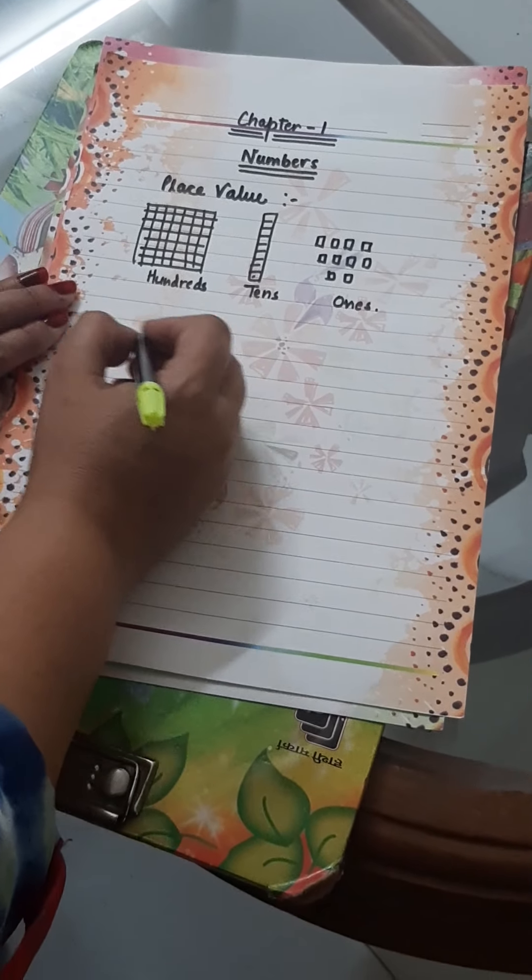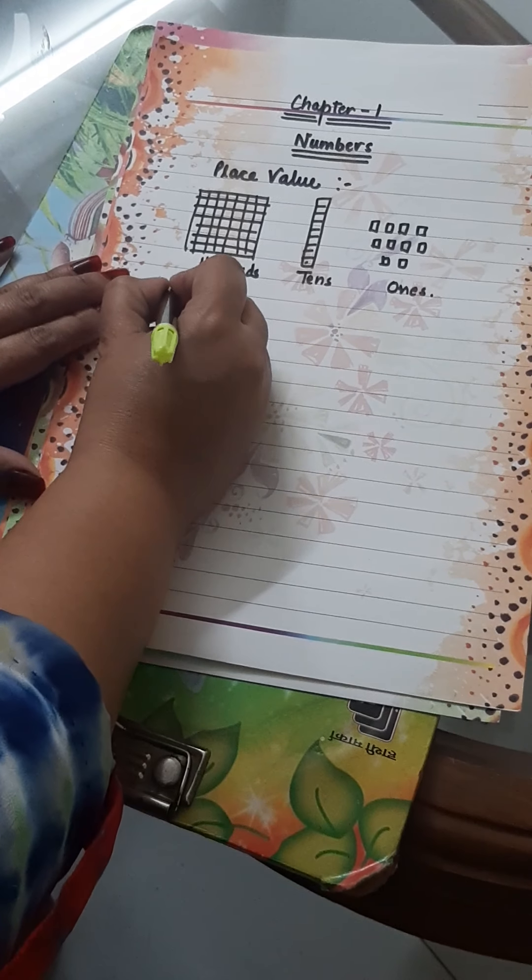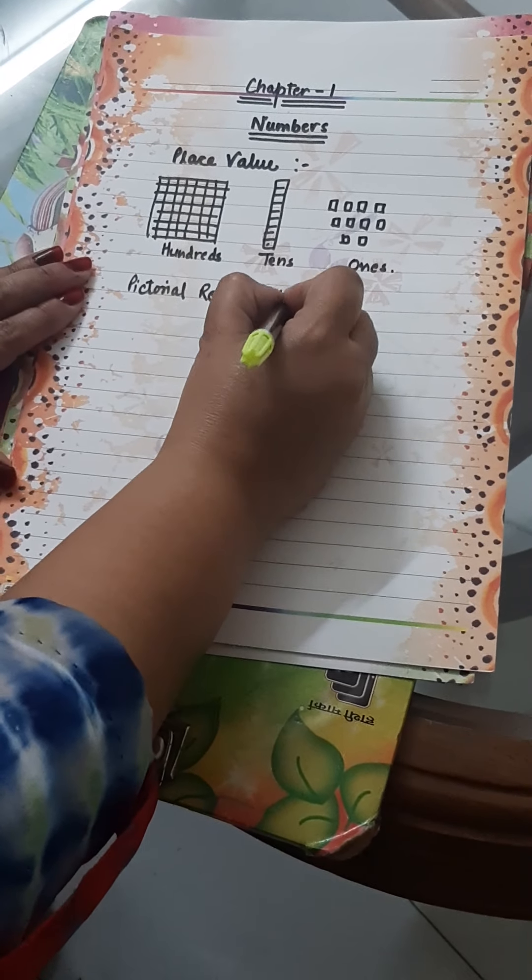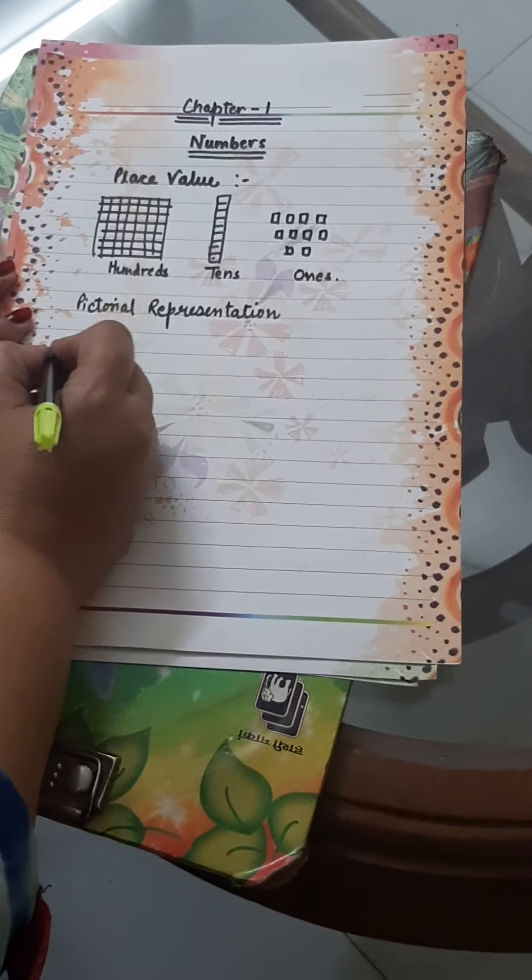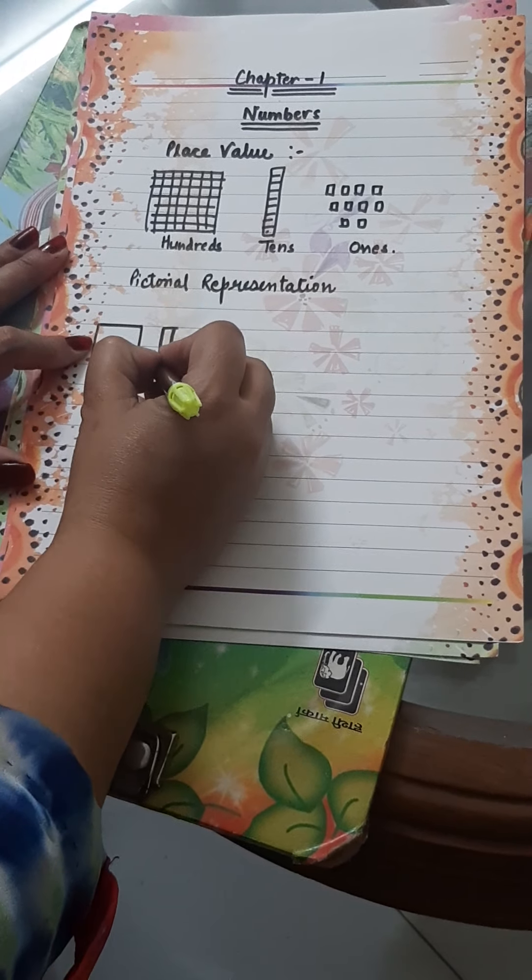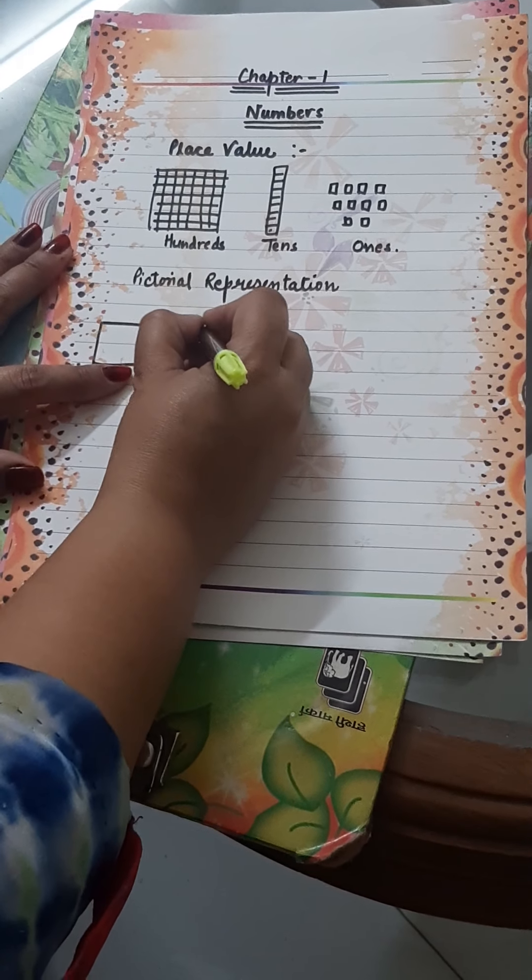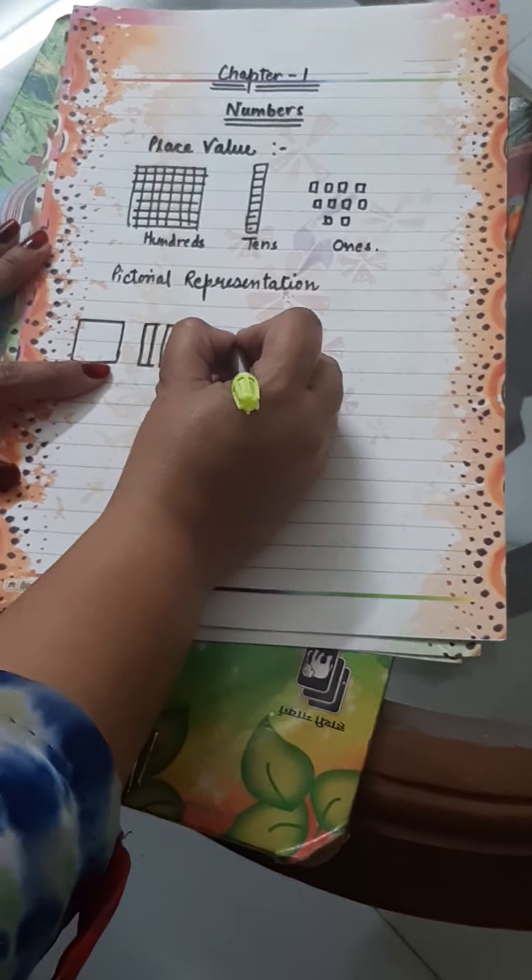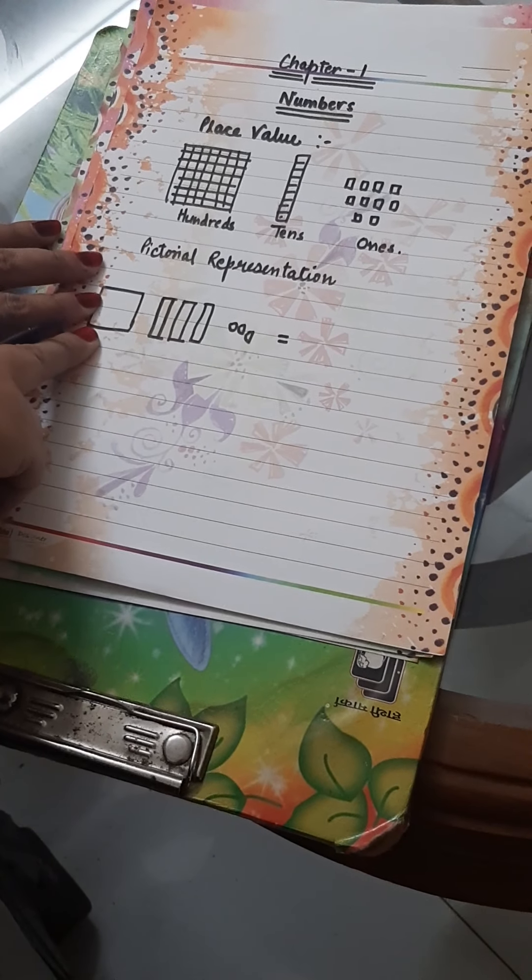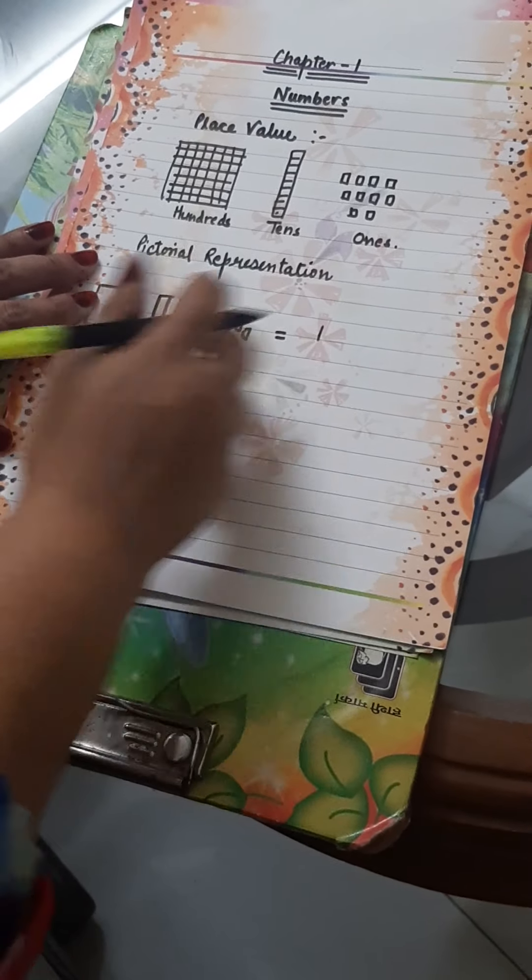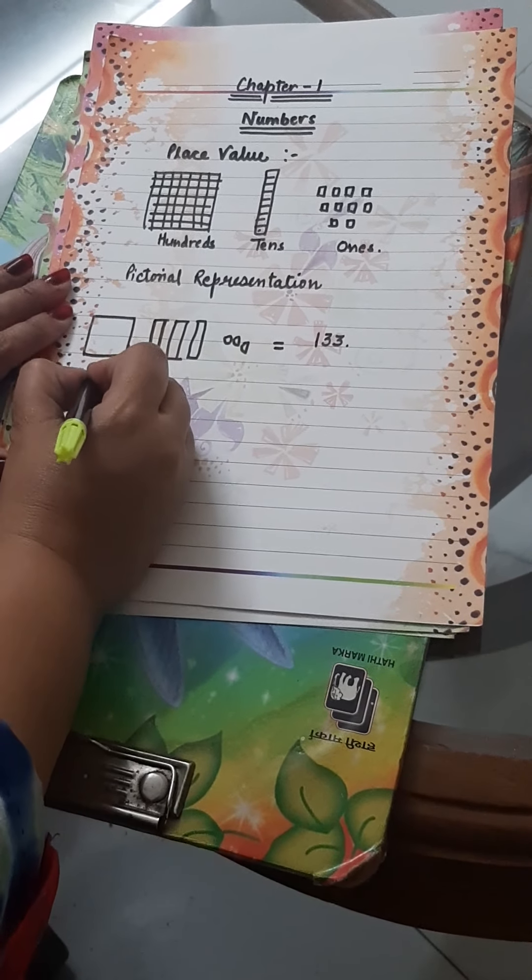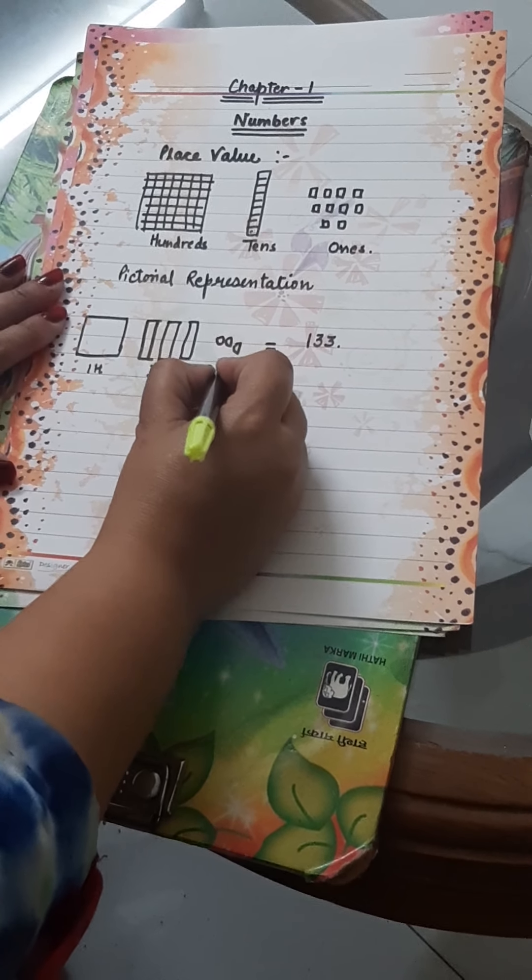Now we will start with the concept. Let us start with pictorial representation. If the number is given you in the form of pictures, you have to sort it out. I have made a box which represents hundreds, a straw that represents tens, and some small numbers. This is 1, so 100, 30, 3. 100, 30 tens and 3 ones.